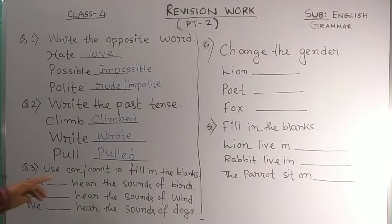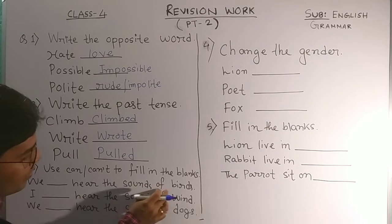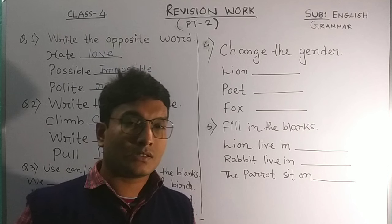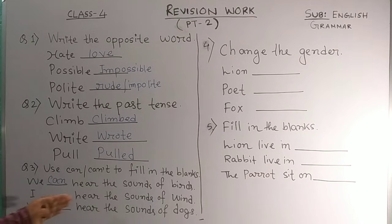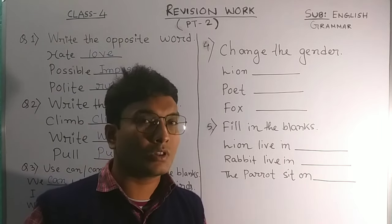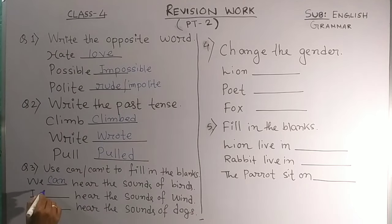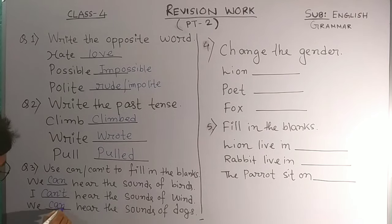Then use 'can' or 'can't' — the short form of cannot. 'We ___ hear the sounds of birds.' We know that when birds make sounds we can hear them, so it will be 'can.' Then 'I ___ hear the sound of wind.' If the air moves very smoothly, we cannot hear it, so it will be 'cannot.' Then 'We ___ hear the sound of dogs.' When dogs bark, we can hear them, so it is 'can.'